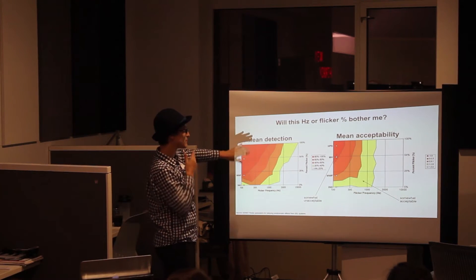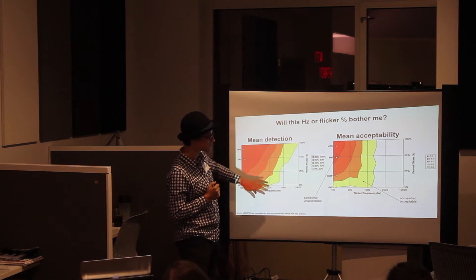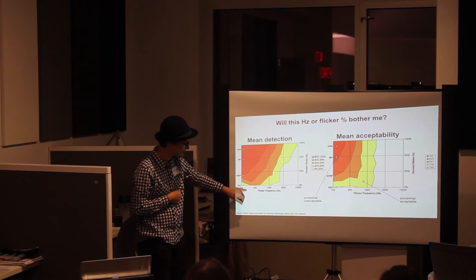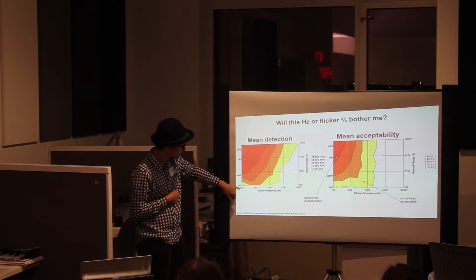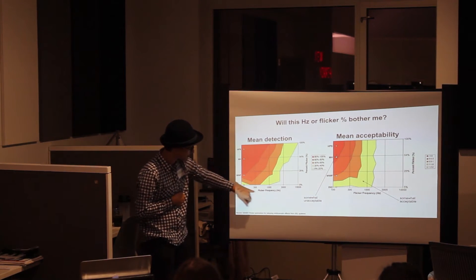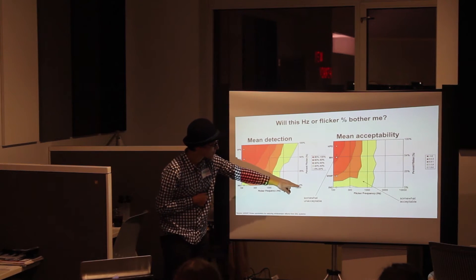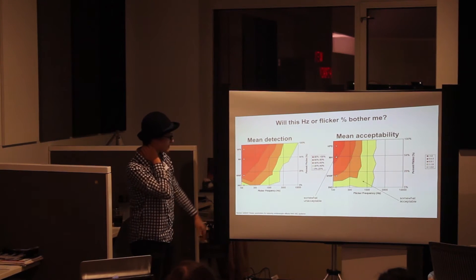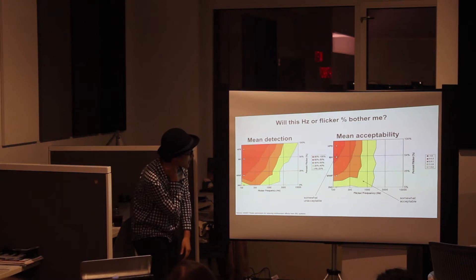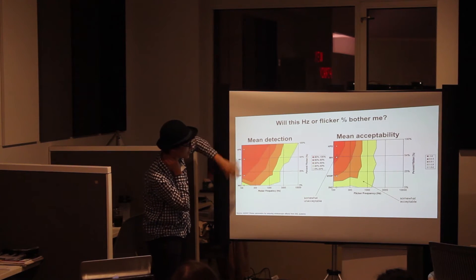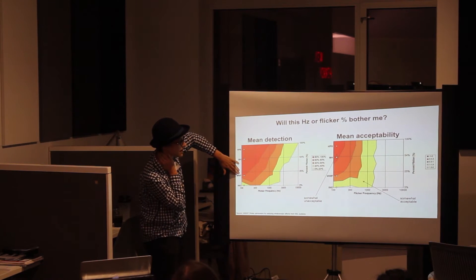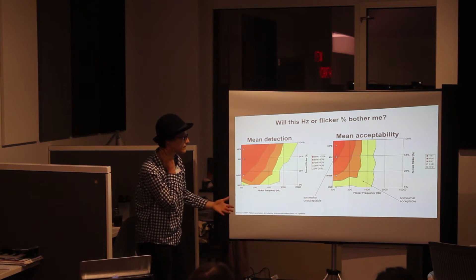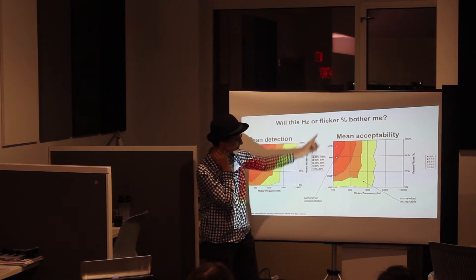There's a difference between what is detected on average by people and what's considered acceptable. These graphs show frequency on the bottom axis — from 100 hertz up to 10,000 hertz — and percent flicker on the vertical axis. People can detect flicker up to pretty high frequency ranges; the red region shows 100 to 80 percent flicker is clearly problematic.